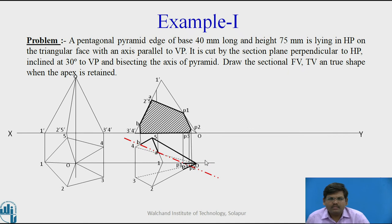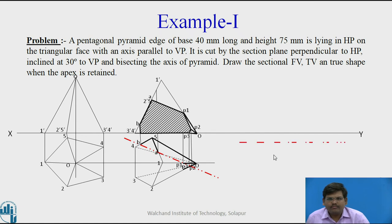This is the complete projection of the section of the solid cut by a section plane inclined at 30 degrees to VP. As the cutting plane is inclined, the obtained section is not the true shape. To obtain the true shape, we reproduce the cutting plane parallel to XY. Before that, we darken the remaining part of the solid in the front view.